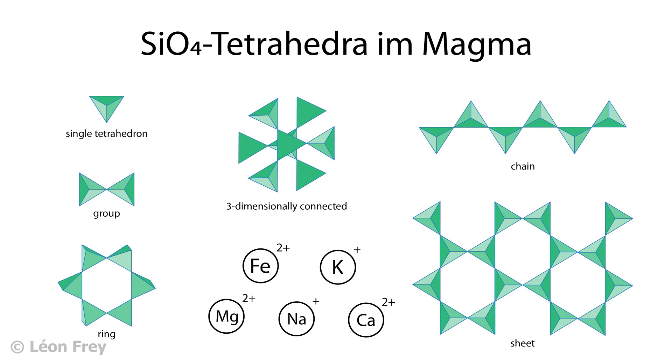In between the tetrahedrons, there are cations like iron, magnesium, sodium, calcium, and others.